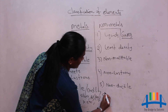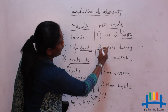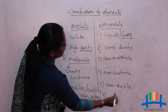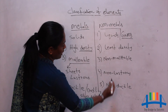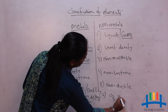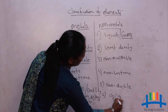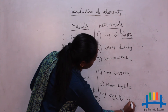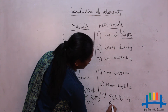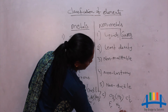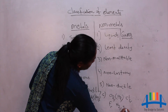Non-metals: the maximum of non-metals are gases. Examples include oxygen (O), hydrogen (H) — which can be considered both a metal and a non-metal — chlorine (Cl), fluorine (F), and nitrogen (N), among others.